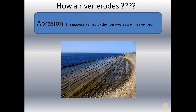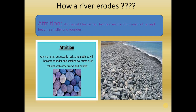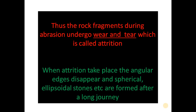Abrasion is one more step in river erosion. The material carried by the river wears away the river bed — this is called abrasion. Another process is called attrition. In this case, the pebbles carried by the river crash into each other and become smaller and rounder. The rock fragments during abrasion undergo wear and tear, which is called attrition. When attrition takes place, the angular edges disappear and spherical or elliptical stones are formed after a long journey.